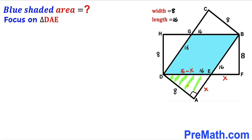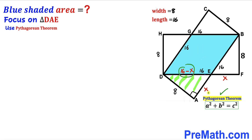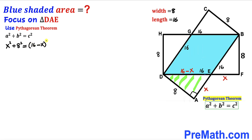Now let's focus on right triangle DAE whose side lengths are 8, X, and 16 minus X. We apply the Pythagorean theorem to solve for X. The hypotenuse is 16 minus X and the two legs are 8 and X. Filling in the formula: X² + 8² = (16 − X)².